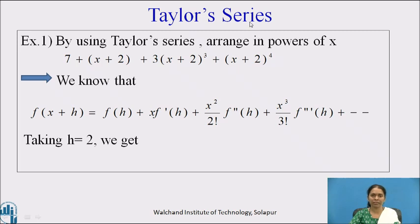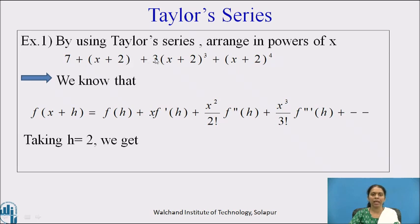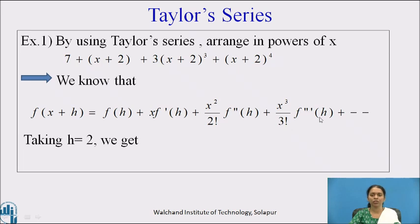We have seen different forms of Taylor Series. Let us work through a few examples using some of those forms. Example number 1: By using Taylor Series arranged in powers of x, the given expression is 7 + (x+2) + 3(x+2)³ + (x+2)⁴. We know that f(x+h) is represented in Taylor Series as f(h) + x·f'(h) + (x²/2!)·f''(h) + (x³/3!)·f'''(h) + ...